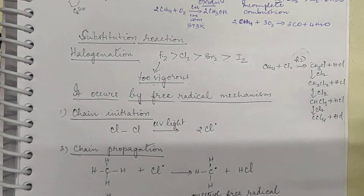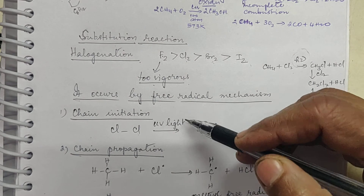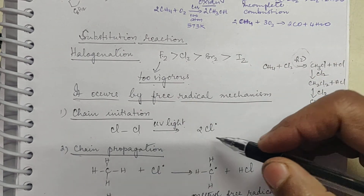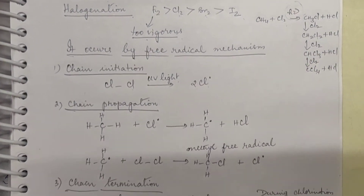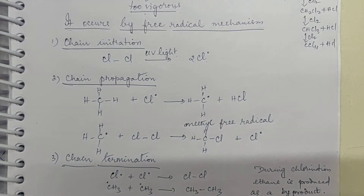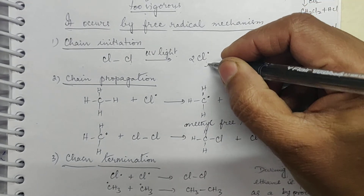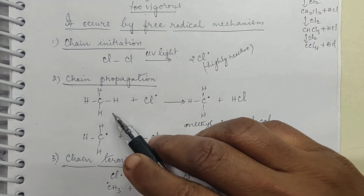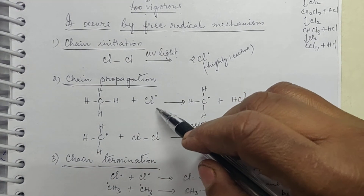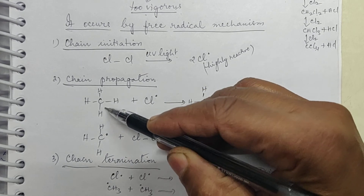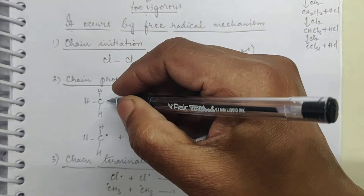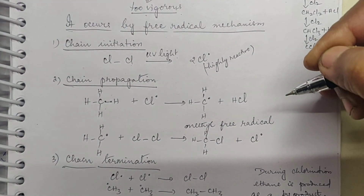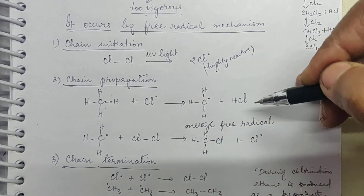The mechanism of halogenation is by free radical mechanism. Chlorine, in the presence of sunlight or UV light, breaks into two chlorine free radicals (Cl•) — this is chain initiation. In chain propagation, the highly reactive Cl• radical hits a methane molecule and tries to break one C-H bond.